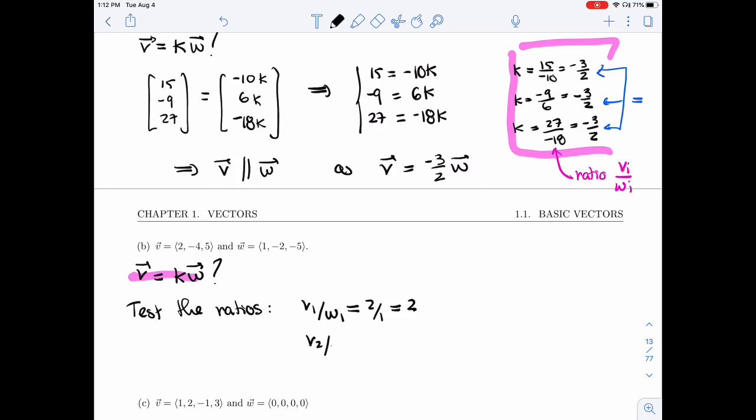Now for the second one, I would take minus 4 over minus 2. Well, I get 2 as well. So K equals 2 would work for the first and the second. Let's check the third.